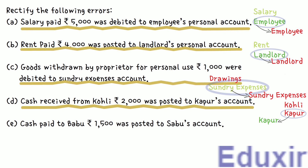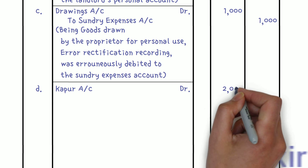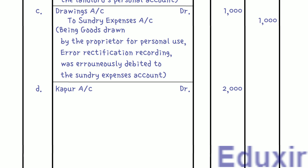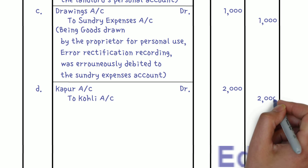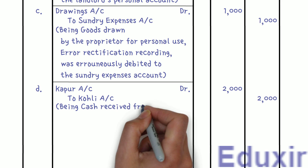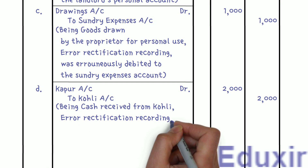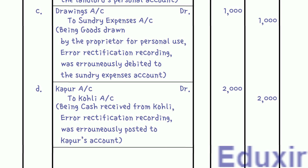Let us record the entry. Entry: Kapoor's Account DR Rs. 2,000; To Kohli's Account Rs. 2,000. Narration: Being cash received from Kohli — error rectification, recording was erroneously posted to Kapoor's account. A line is drawn to mark completion of these entries.